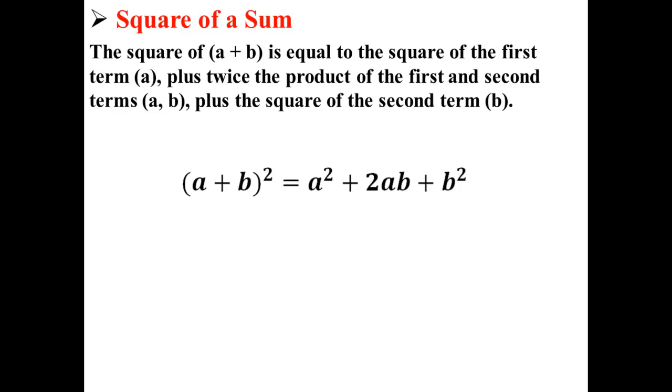Basically, what that's saying is that (a + b) squared is equal to a squared plus 2ab plus b squared. Let's try to work this out using the FOIL method so you can see why this is true.